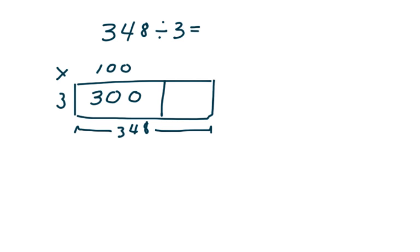Okay, now we need to know what's left over to find the next chunk of the dividend. So to do that we're going to subtract the 300 from 348 which gives us 48.